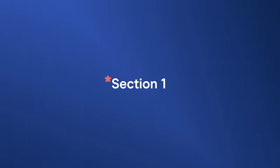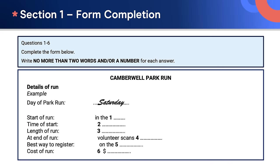Let's start our practice with section one of the IELTS listening test. This is a form completion question. We'll hear two people in conversation discussing a form that they need to complete. Read the instructions — they're printed in bold capital letters because they're important. Read everything so you understand the context. Predict the kind of information you'll be listening for. For example, we can see that question two will be a time. Be careful of distractors.